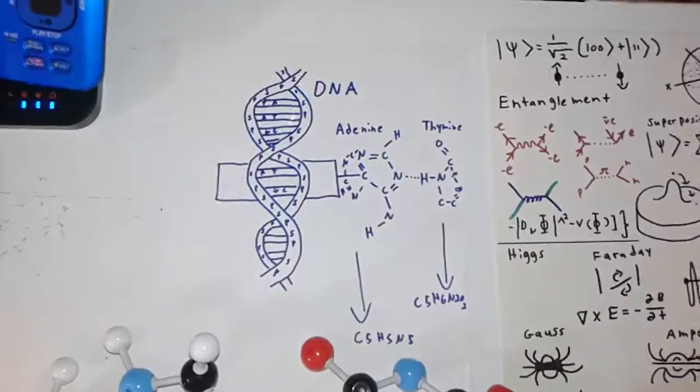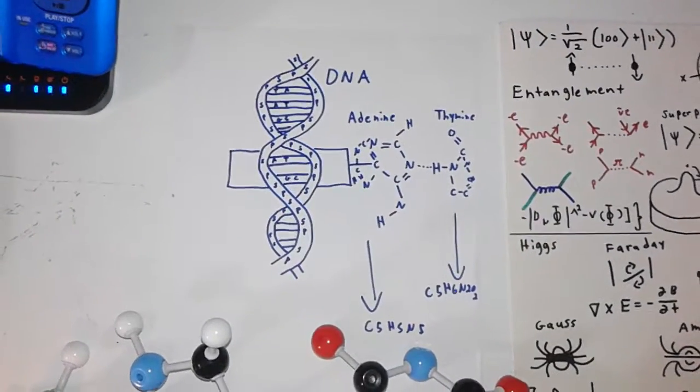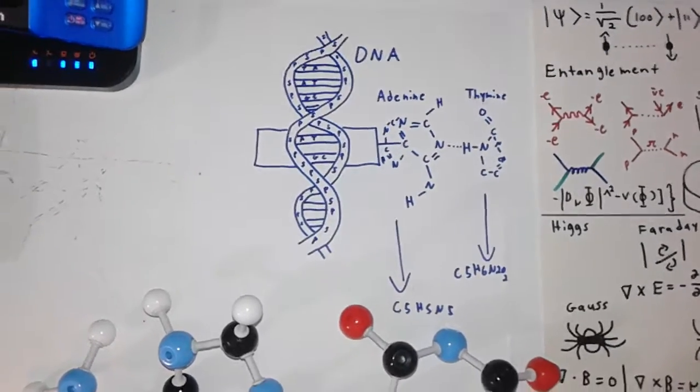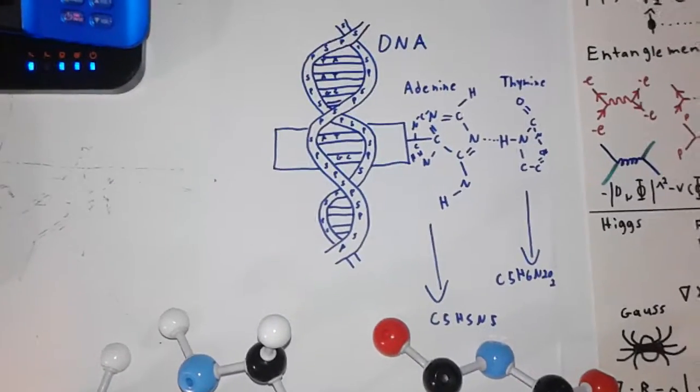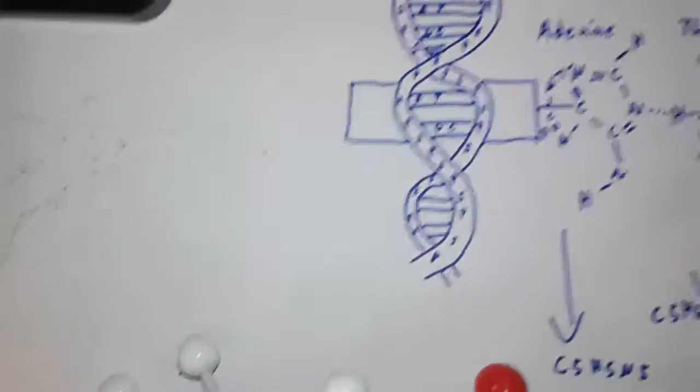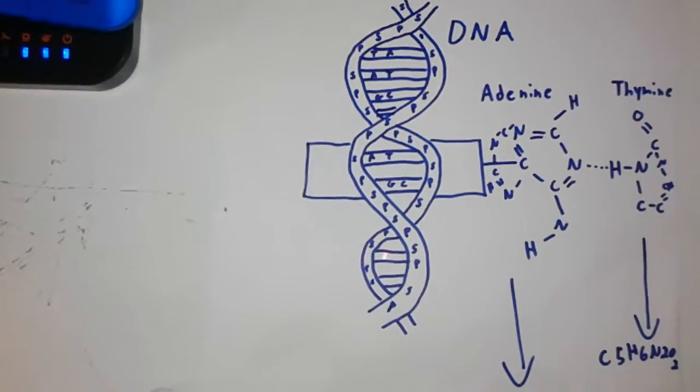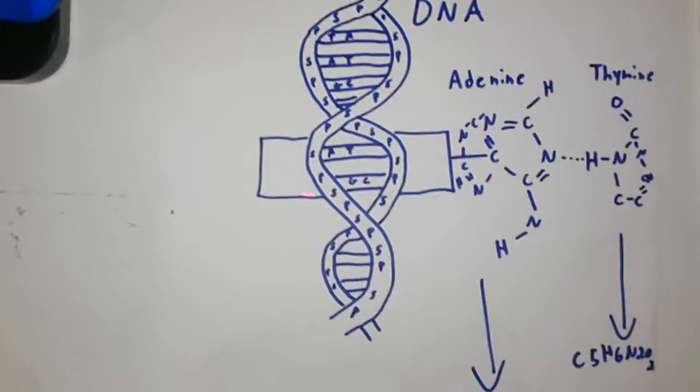This helix is deoxyribonucleic acid, it has an ATCG sequence, and as you can see we're going to be focusing mainly on the bond between adenine and thymine in this particular base pair right here.